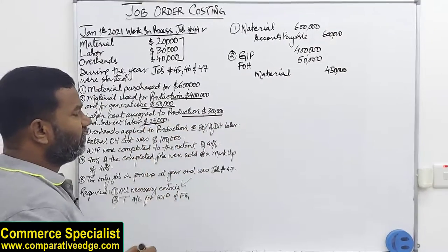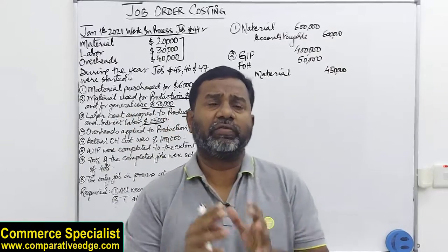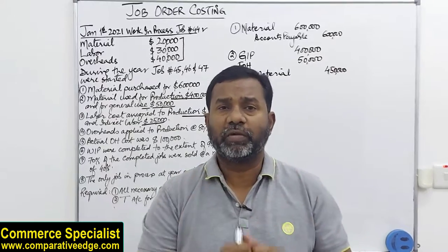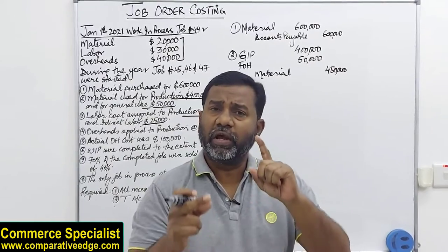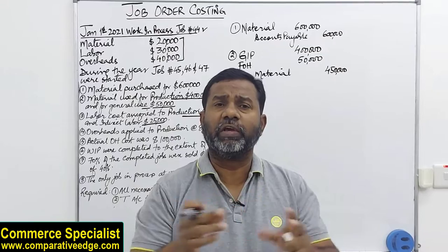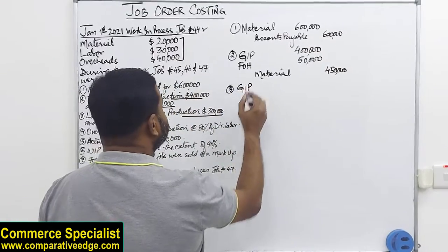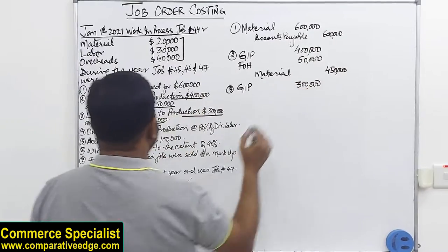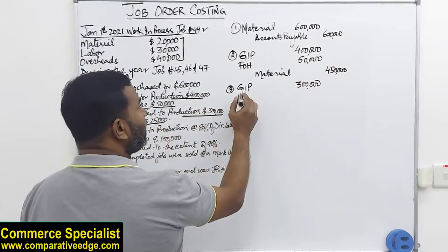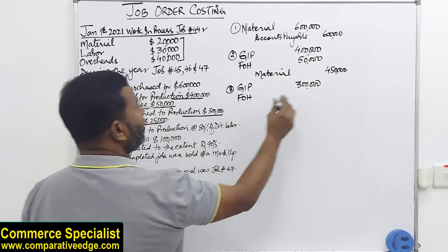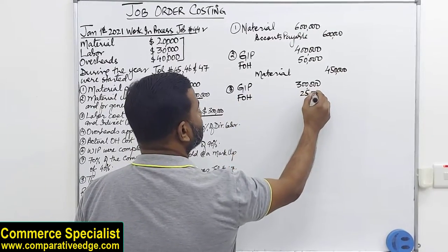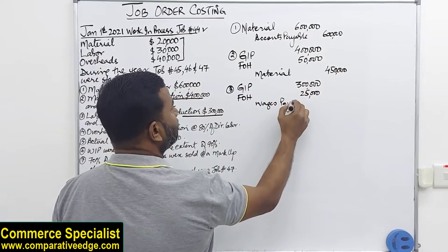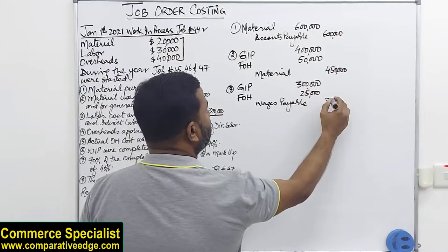Entry number three: labor cost assigned to production 300,000, and indirect labor is 25,000. Again, whether it's direct material or direct labor, we debit goods in process 300,000. For indirect labor, since indirect costs are part of overheads, we debit overhead 25,000, and credit wages payable with the total of 325,000.